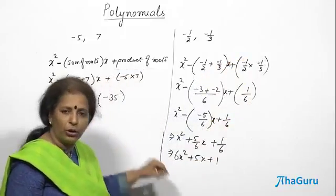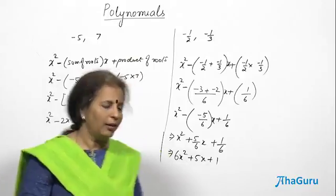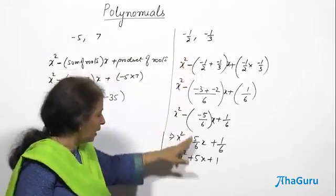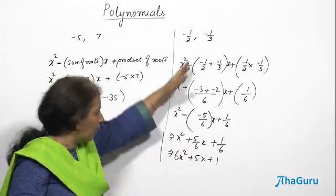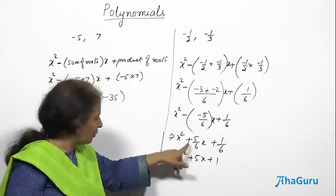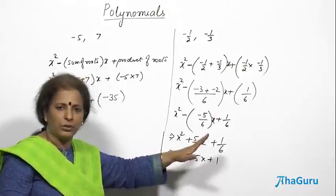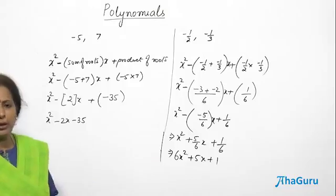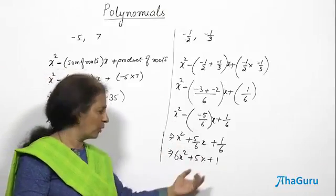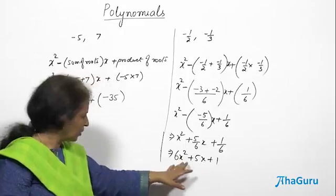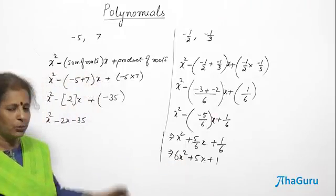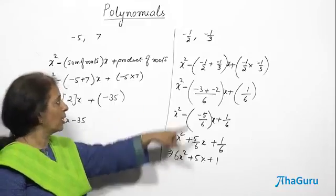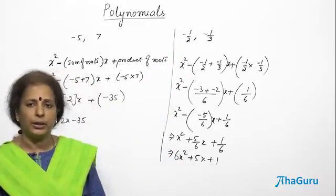It's not a difficult thing — we simplified by multiplying throughout by a number to remove the denominators, because we don't want fractions in the final polynomial. So 6x squared plus 5x plus 1 is the polynomial whose roots are minus 1 by 2 and minus 1 by 3.